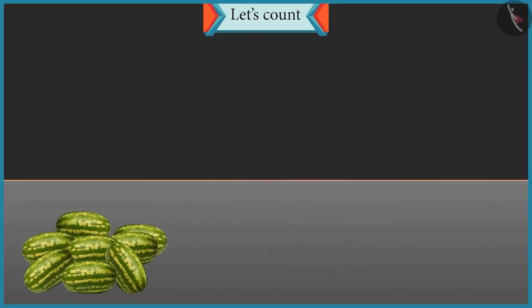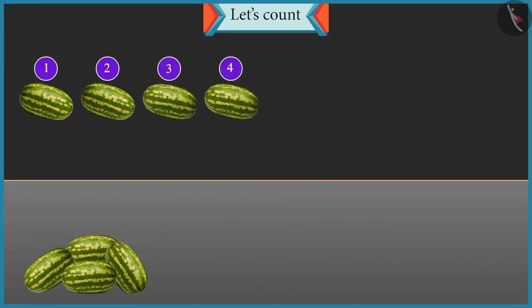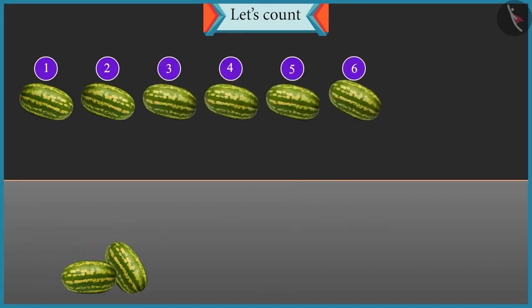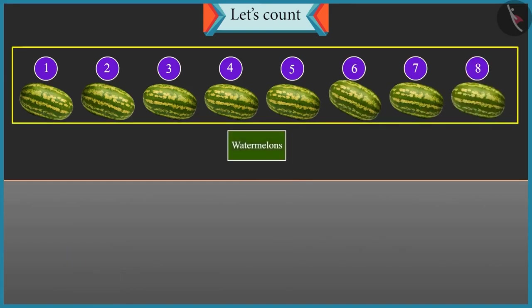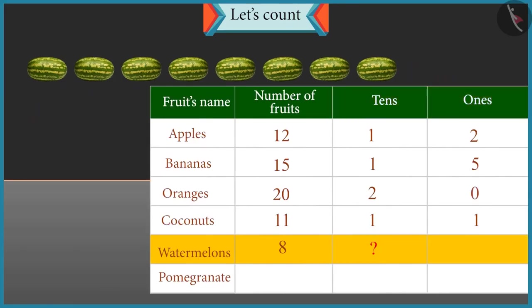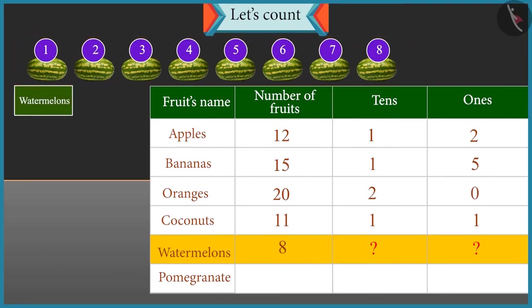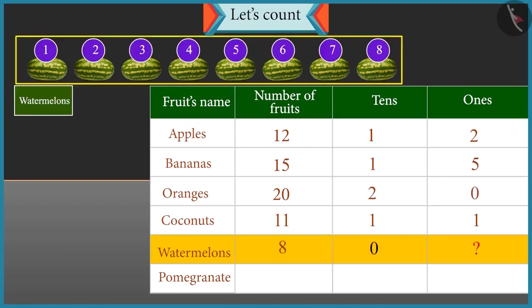Now count these watermelons and tell their count. 1, 2, 3, 4, 5, 6, 7 and 8. There are 8 watermelons. So how many tens and ones are there in 8? There are only 8 watermelons. So we cannot form any group of 10. So there is 0 tens and 8 ones.